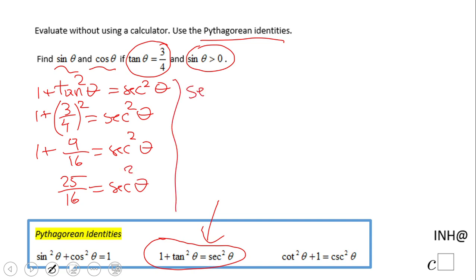And now if I want to find secant, obviously I need to do one more step which is take square root. But when you take square root you need to put a plus and minus and we get 5 over 4 plus or minus.